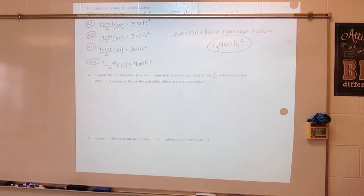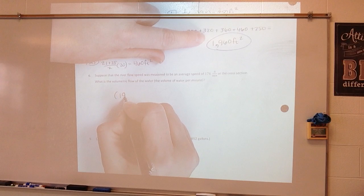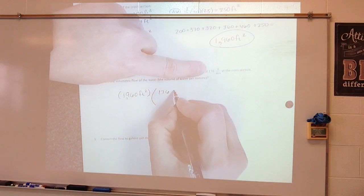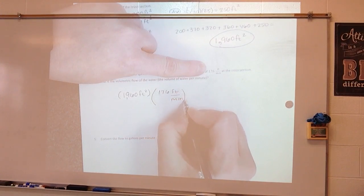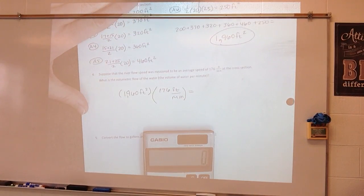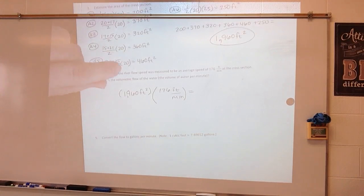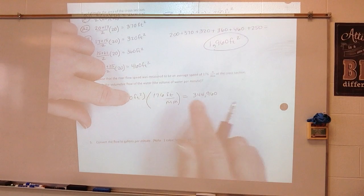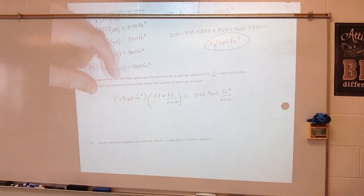Alright suppose that the river flow speed was measured to be an average speed of 176 feet per minute at the cross section. What is the volumetric flow of the water or the volume of water per minute? So in order to figure that out what I'm going to do is I'm going to multiply my area times the rate that it is supposed to be flowing. So when I multiply that 1960 times 176 I get 344,960 feet cubed per minute. So it is flowing at 344,960 feet cubed per minute.